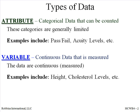There are two types of data, and we will be working with both types. Attribute data is data that we can put into categories — this type of data is counted. Items such as pass-fail and acuity levels are considered attribute data. Anyone that has answered a survey or rated something on a scale of one to five is using attribute data.